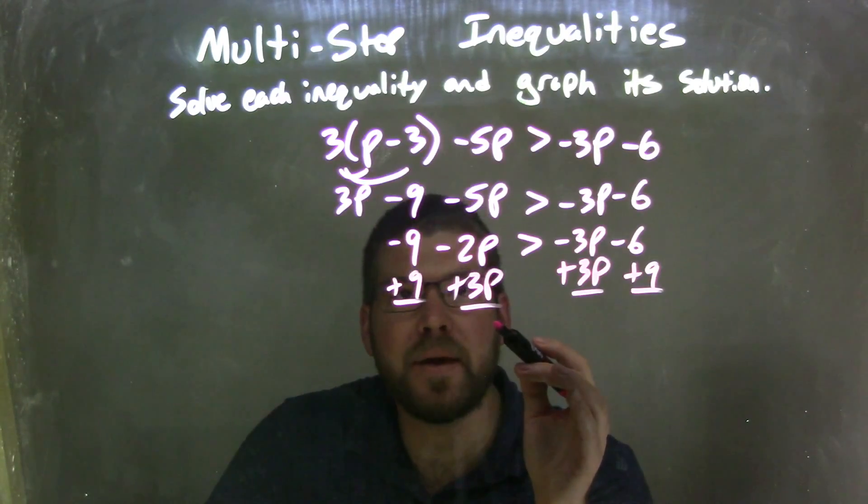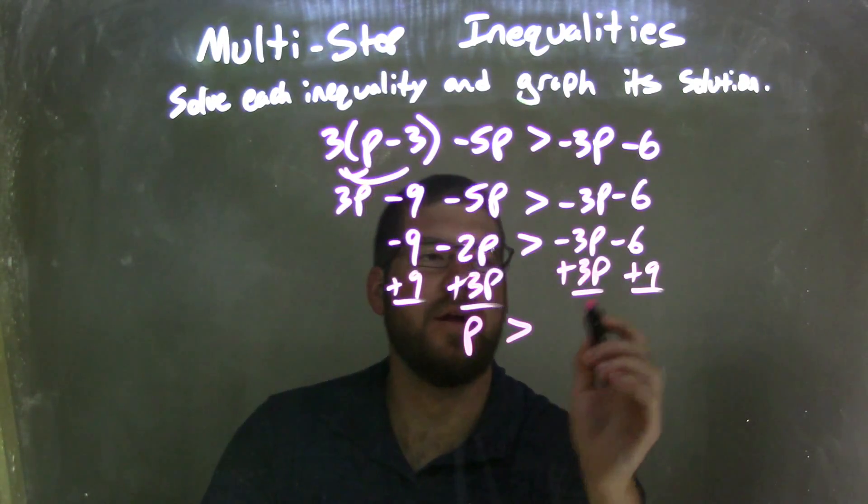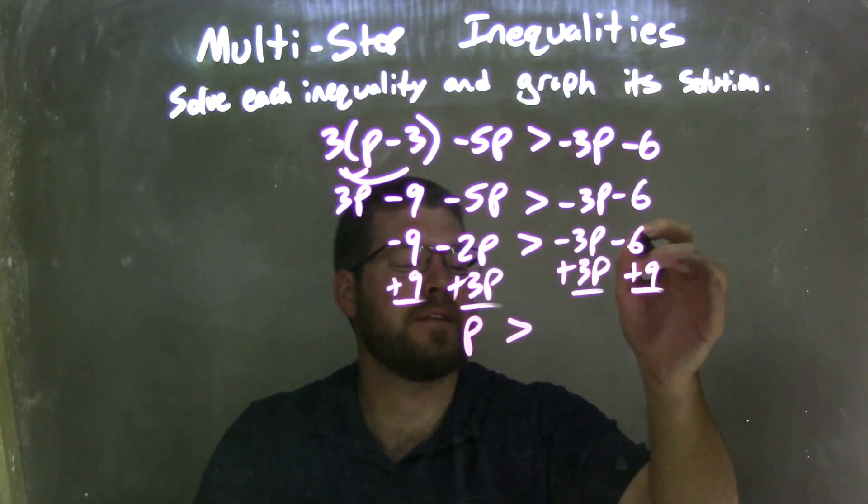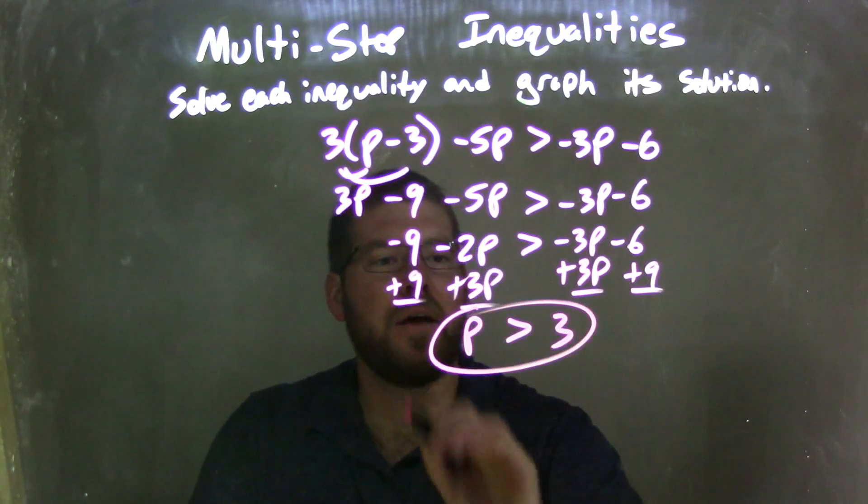Well, negative 2p plus 3p comes out to be positive 1p. That's still greater than, and negative 6 plus 9 is positive 3. And now we have p by itself, so p is greater than 3.